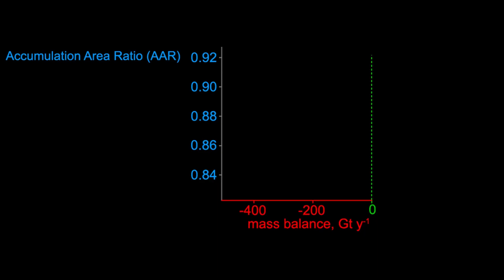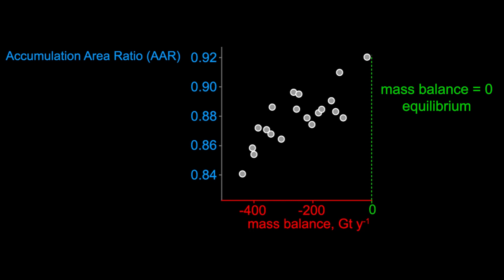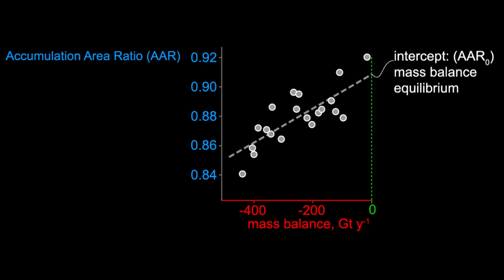We see this accumulation area ratio changing on the vertical axis, and on the horizontal axis we have the observed ice sheet mass balance. On the graph where there is equal snow accumulation and ice loss, we have an equilibrium. Here you can see a statistical property of the data: the accumulation area ratio in the condition of mass balance — the equilibrium accumulation area ratio.